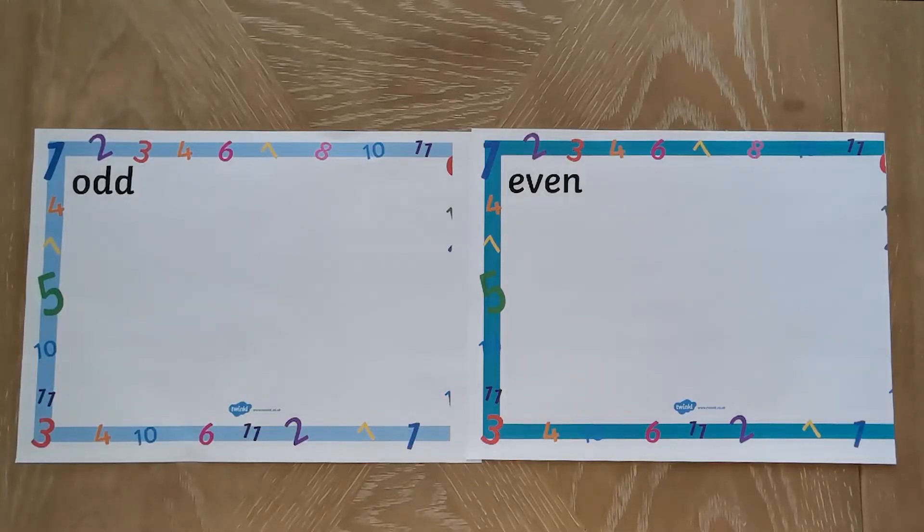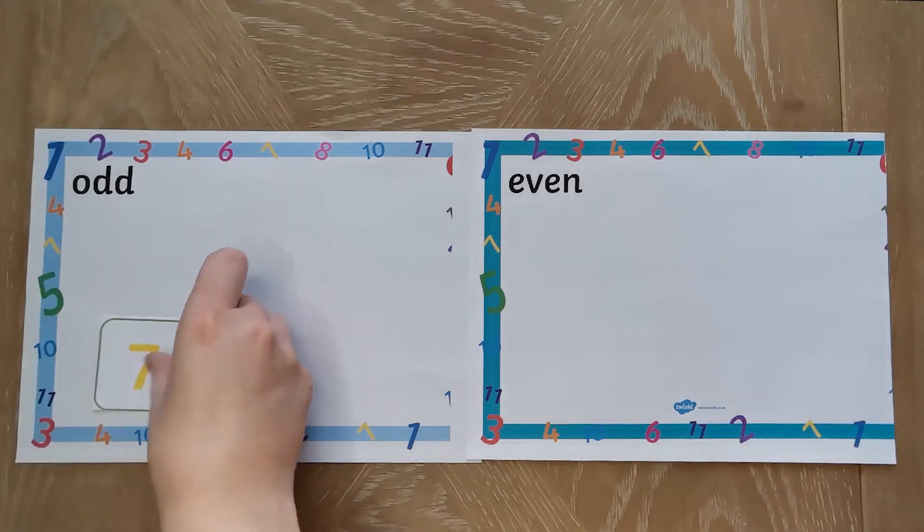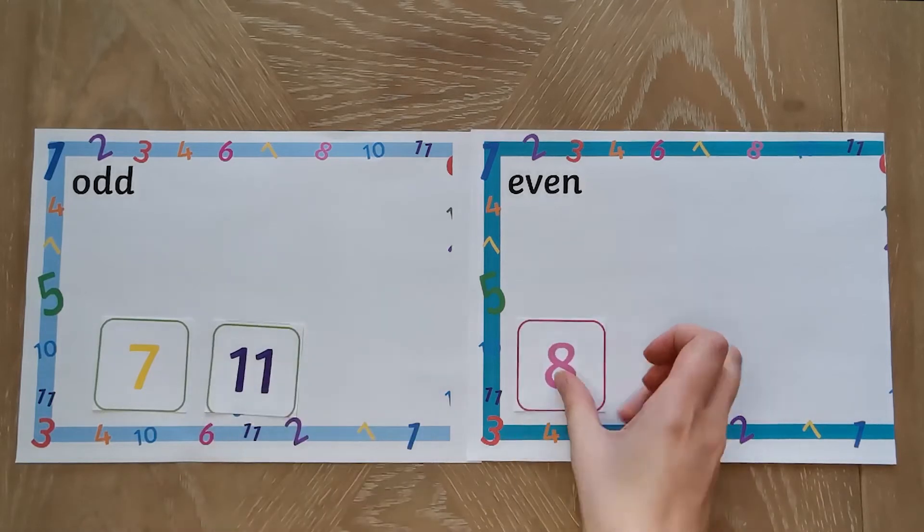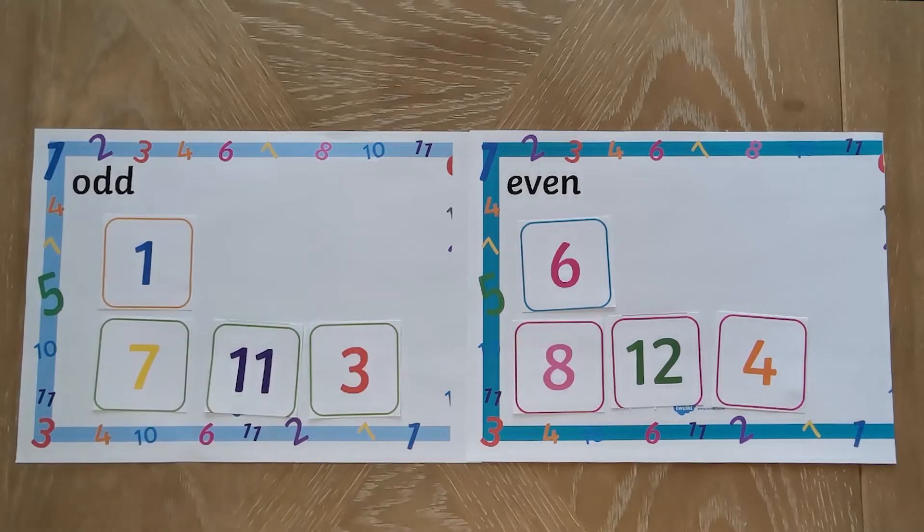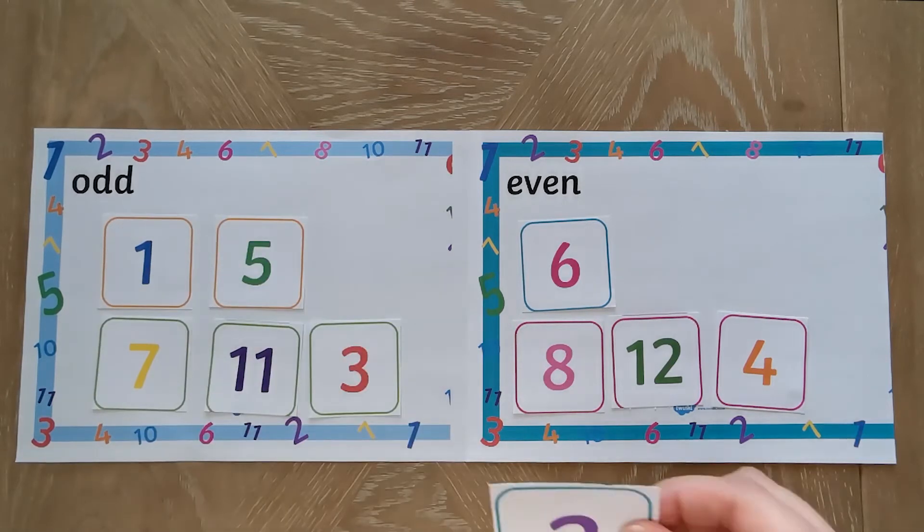These sorting sheets are split into odd and even numbers. You can help children sort the number cards by pointing out the odd numbers will always end in one, three, five, seven, and nine, and even numbers will always end in zero, two, four, six, or eight.